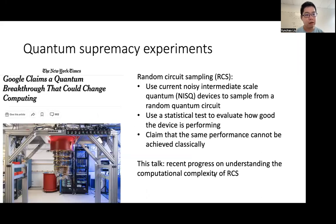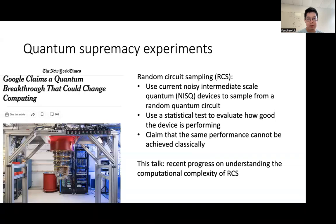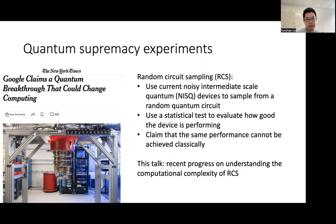The motivation of this work came from the recent quantum supremacy experiments, where Google claims a quantum breakthrough that could change computing. The task performed in these experiments is called random circuit sampling, which consists of three steps. First, we use current noisy intermediate-scale quantum devices to sample from a random quantum circuit. Second, because these experiments are very noisy, we use a statistical test to evaluate how well the device is performing. And finally, we claim that the same performance cannot be achieved classically. In this talk, we will discuss recent progress in understanding the complexity of random circuit sampling.